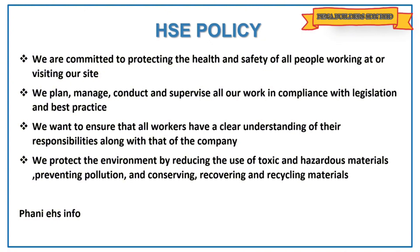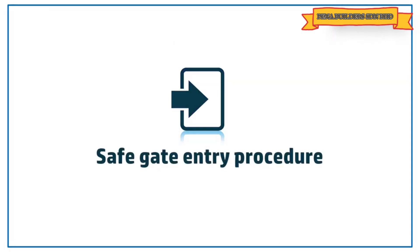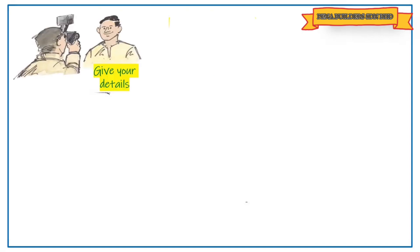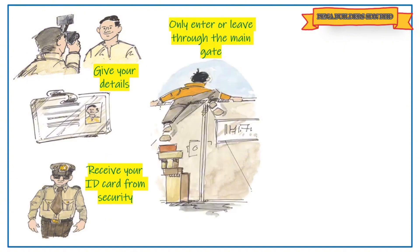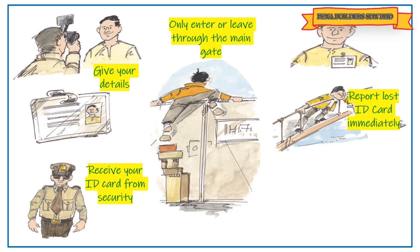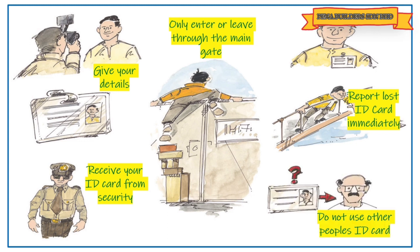Next is the safe gate entry procedure. To enter the site, give your details to the HR department and receive your ID code from security. Only enter or leave through the main gate. Report a lost ID card immediately and do not use other people's ID cards.